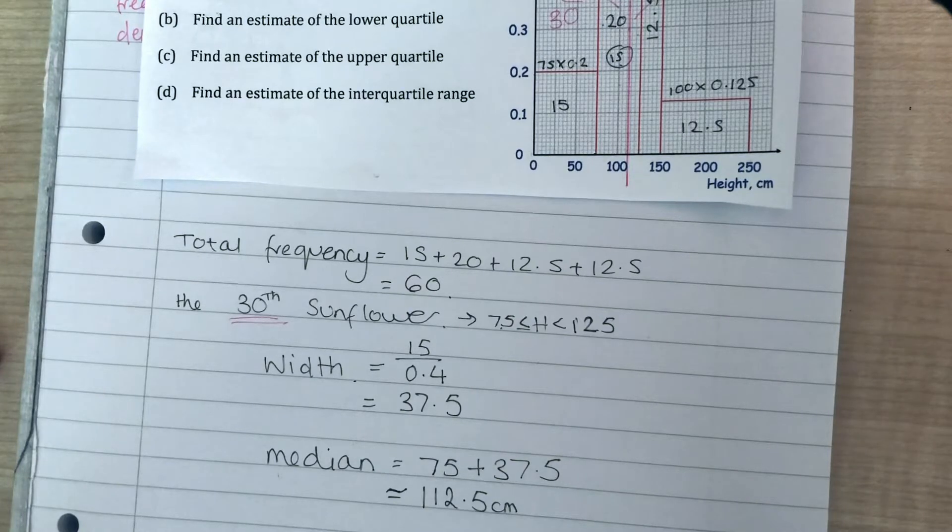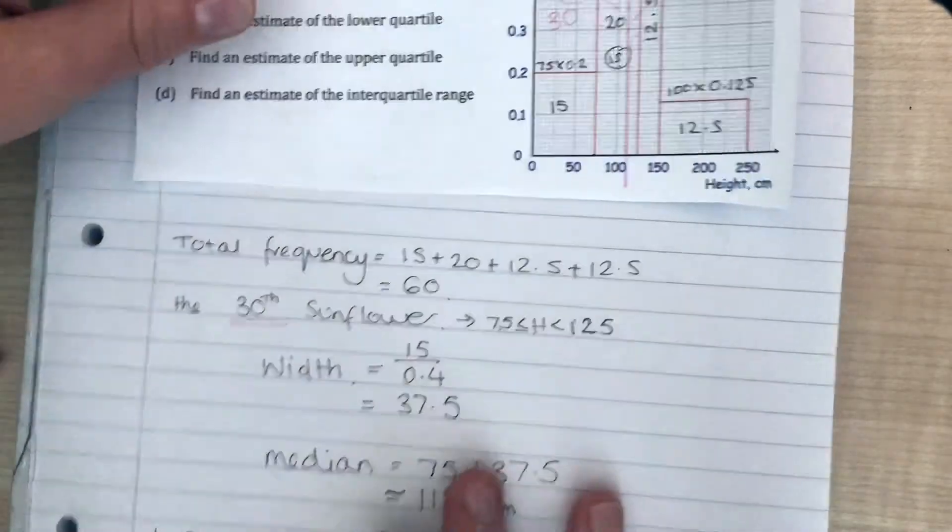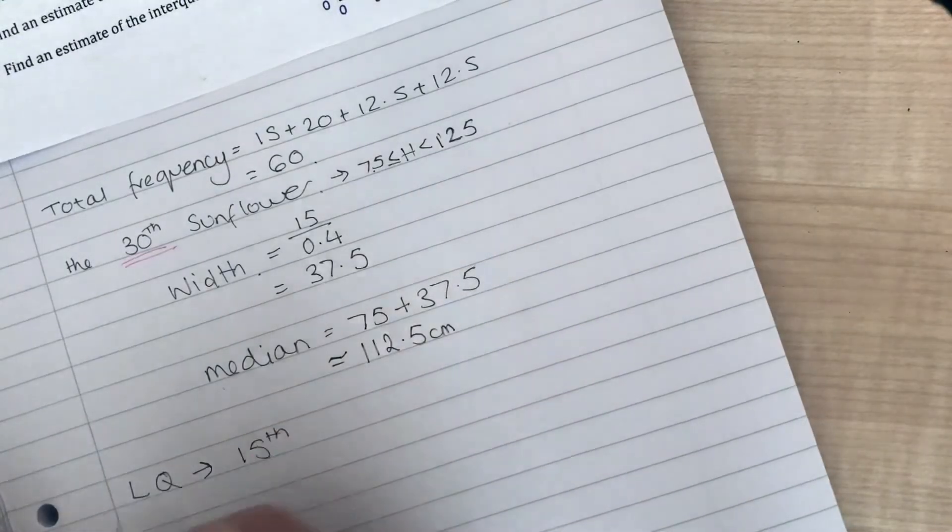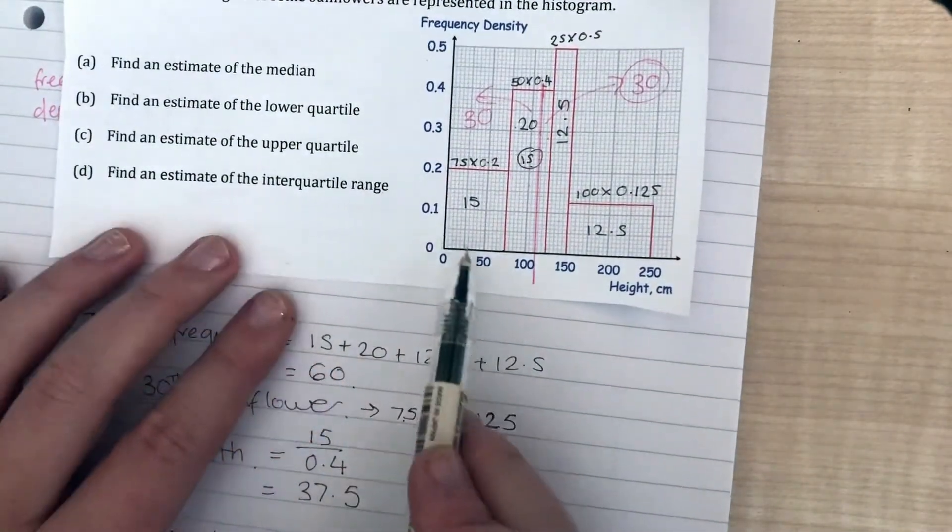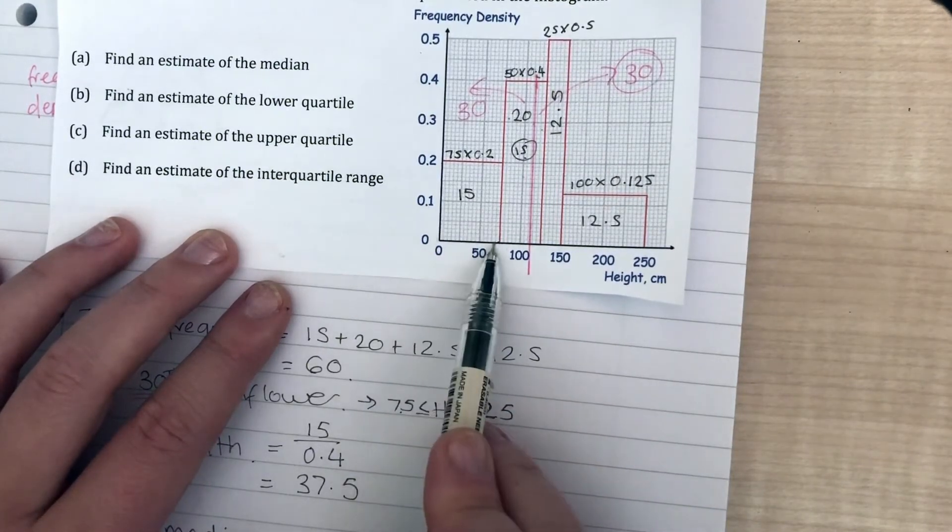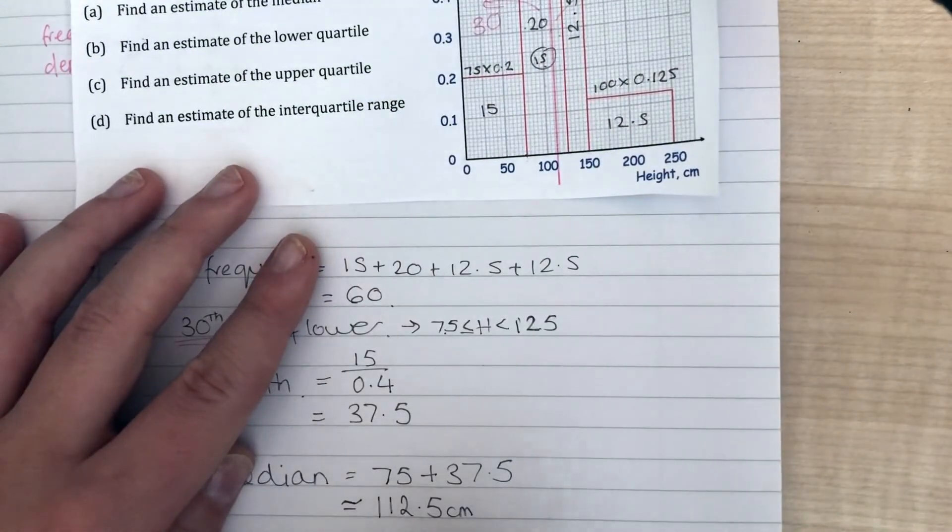Now to work out the interquartile range, we're going to use a similar type of strategy. We know that the 30th is in the middle, so the lower quartile is going to be the 15th thing and the upper quartile is going to be the 45th thing. Luckily for us, this first bar is done for us. The lower quartile, there's 15 things there, so the lower quartile for the height of these sunflowers is 75 centimeters.